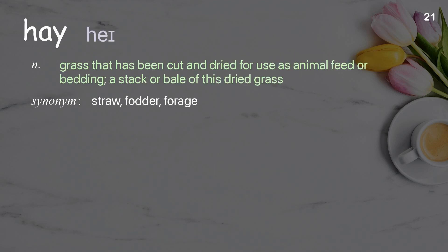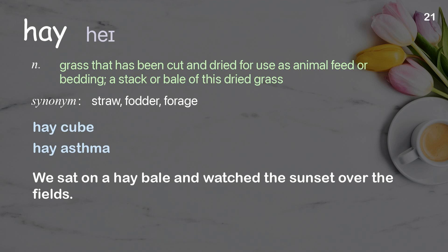Hay: Grass that has been cut and dried for use as animal feed or bedding; a stack or bale of this dried grass. Examples: Hay cube. We sat on a hay bale and watched the sunset over the fields.